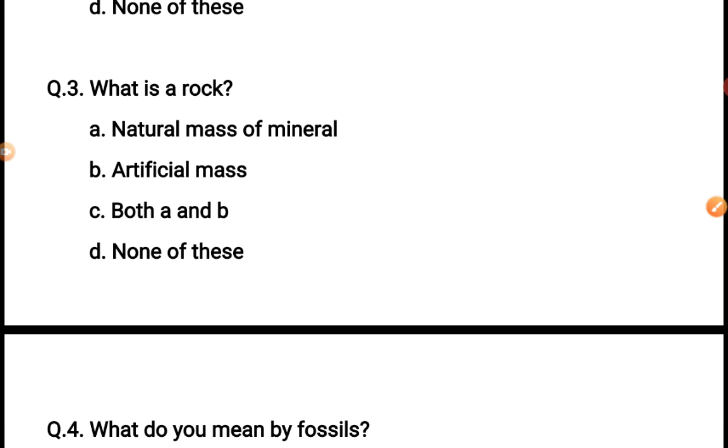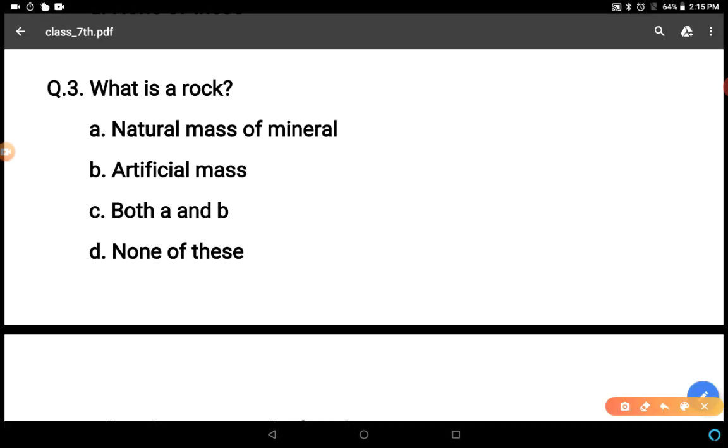What is a rock? Natural mass of mineral, artificial mass, both A and B, none of these. Rocks are natural masses, right? So A is the correct answer - natural mass of mineral.